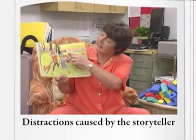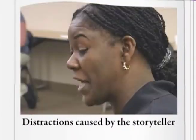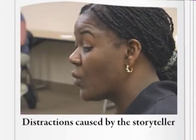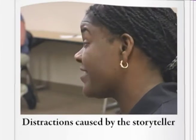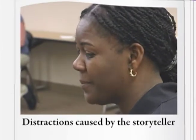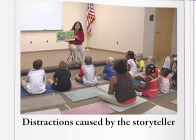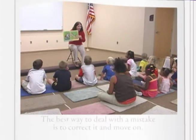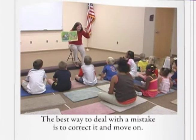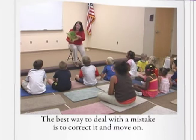The first is the distraction caused by the storyteller. If they make a mistake or error, their tendency might be to apologize, retrace the story, or lose their calm. But the best way to deal with a mistake is to simply correct it and move on.